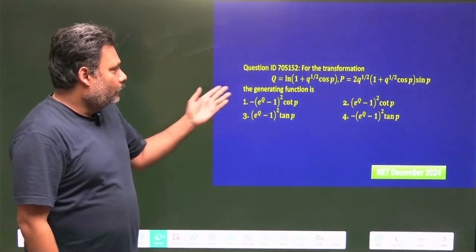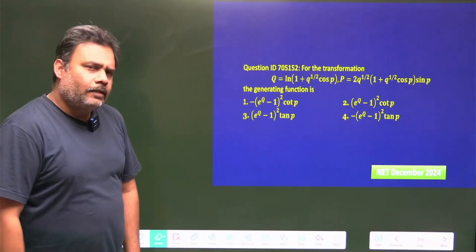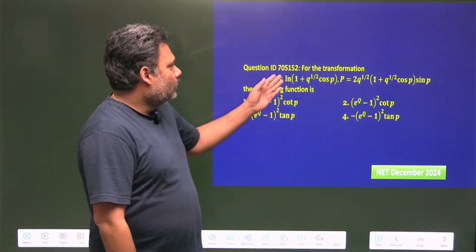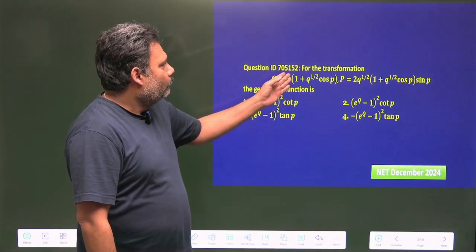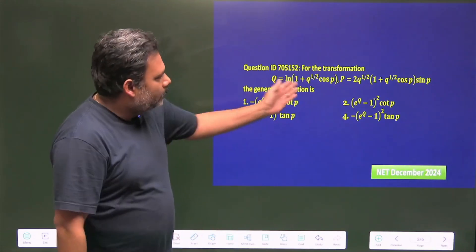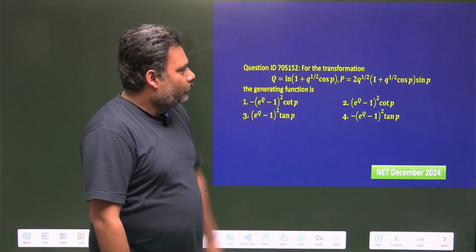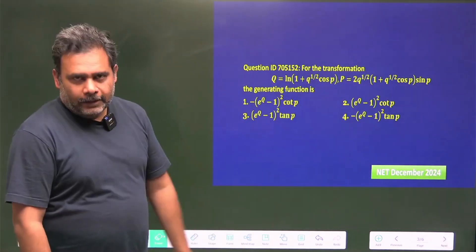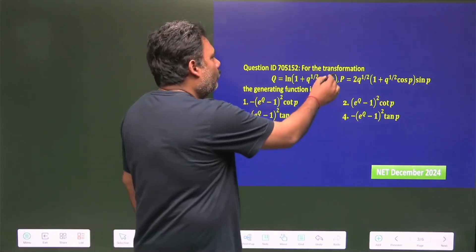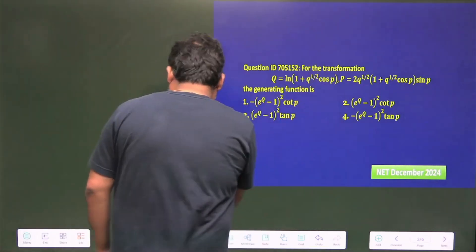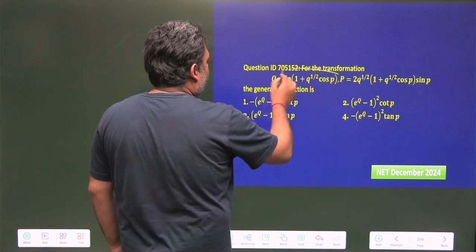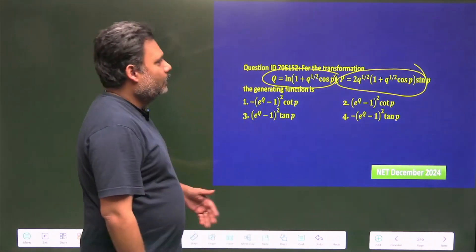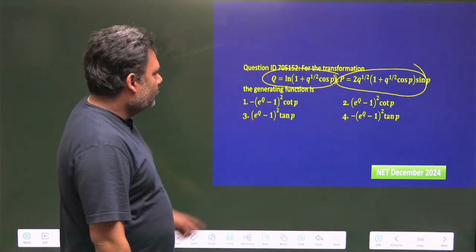Let's try to solve this question from the CSIR NET 2024 December exam — question number 152705115. Capital Q and capital P are given as a canonical transformation. We have to find the generating function. This is a very complex transformation: there is a log, Q to the power half, and we have to find the generating function.